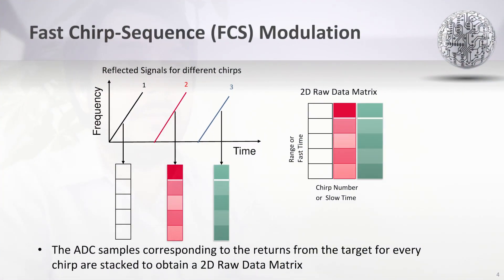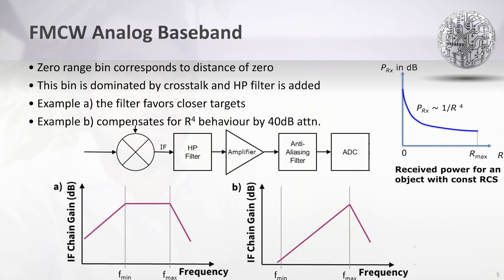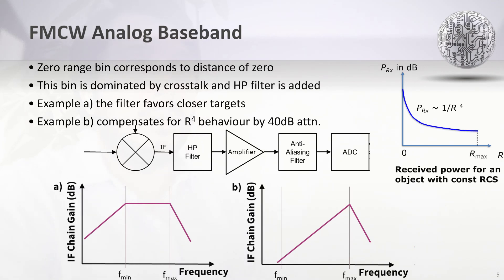One of the most popular modulation techniques is the frequency modulated continuous wave radar using fast chirp sequence modulation. A series of fast chirps is transmitted. The ADC samples corresponding to the downconverted reflected signals are processed and stacked to obtain a 2D raw data matrix. Fourier transform is performed on fast time for range information or over chirp number for velocity information. The 0 range bin corresponds to a distance of 0 and is dominated by crosstalk, so a high pass filter must be added. The corner frequency of the analog baseband can be selected to either favor close targets or equalize the reflected power up to the maximum distance, compensating for the 1/r⁴ attenuation by adding a 40 dB filter to attenuate closer targets.